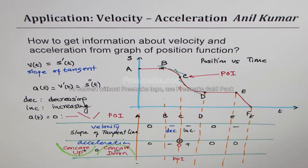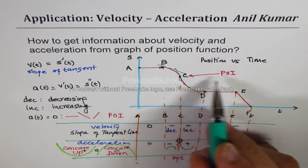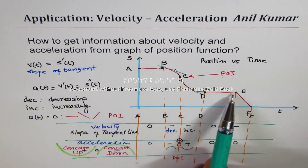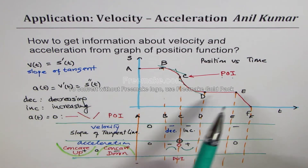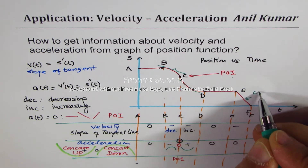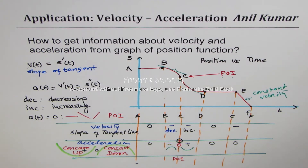When I say negative concavity it means concave down. In this interval the graph is concave down, and in the next interval it is concave up, with a point of inflection temporarily at c. At all places where we have horizontal lines or constant change in position — which is constant velocity — acceleration is zero.